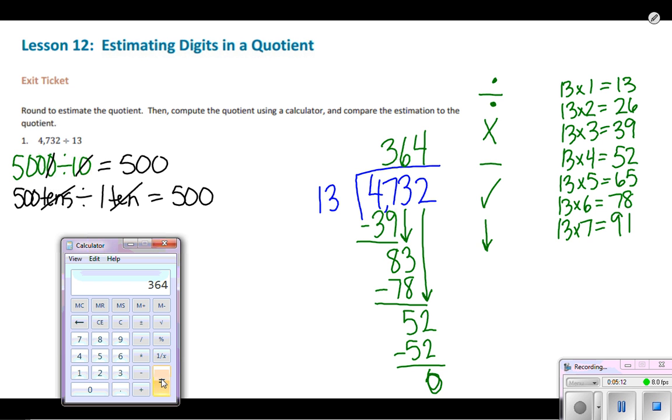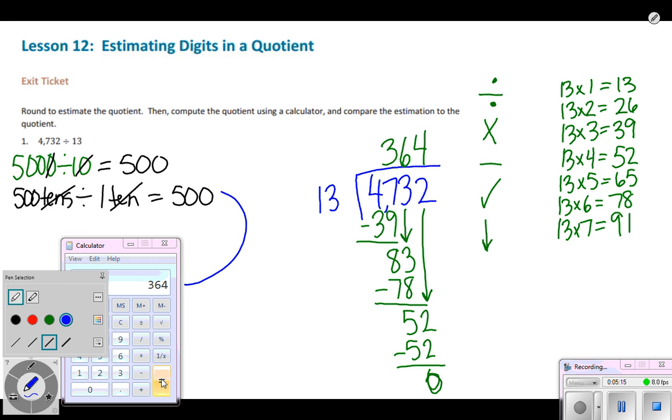Now, I also want to go back and look at my estimate. My estimate is 500. So our places of value, they're both in the hundreds with our answer. But I also know that my estimate was going to be an overestimate. My actual number was 4,732. I went over to 5,000. My actual divisor was 13, but we rounded that down to 10. So I'm actually going to get more sets of that. So it is a reasonable estimate.